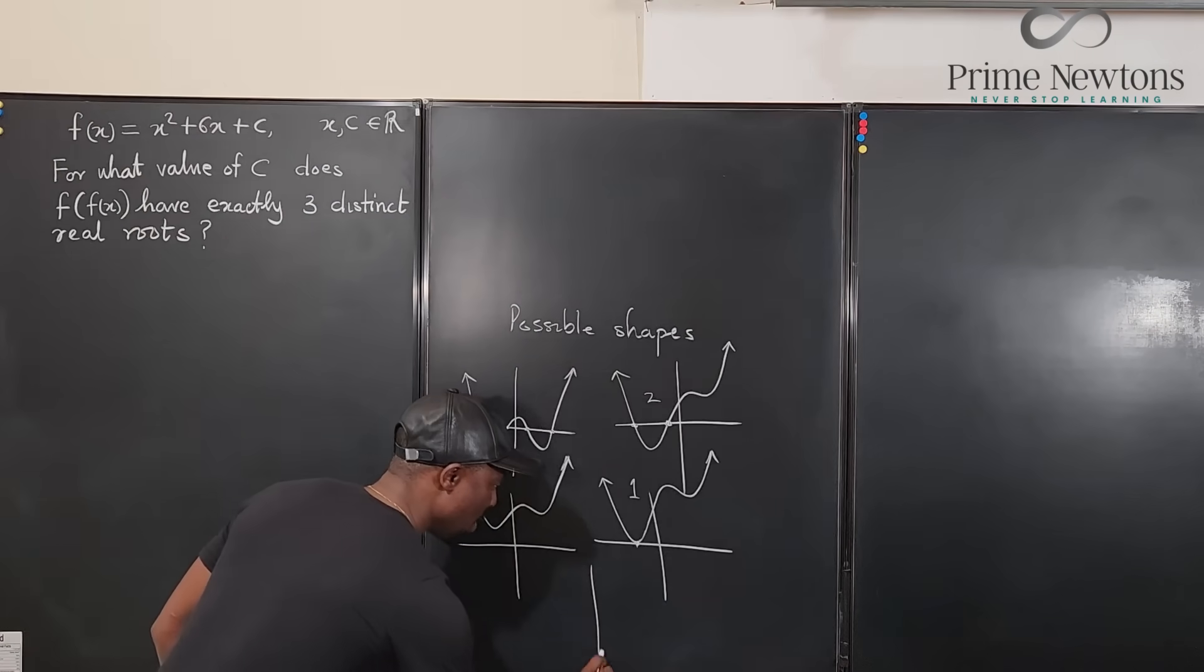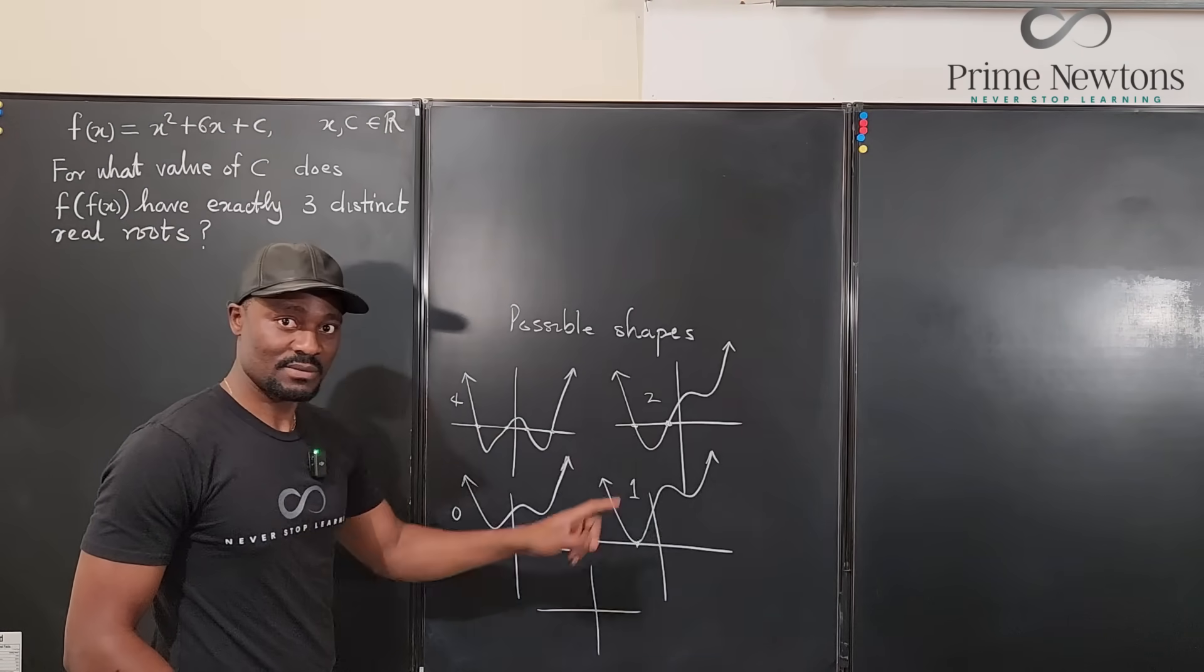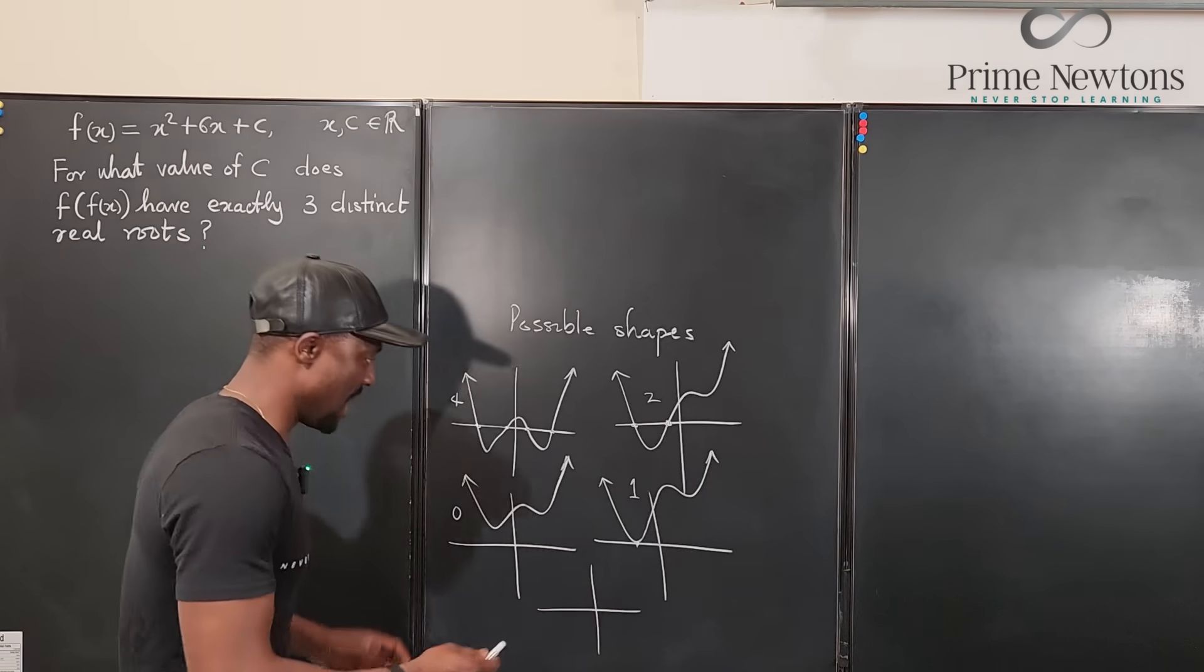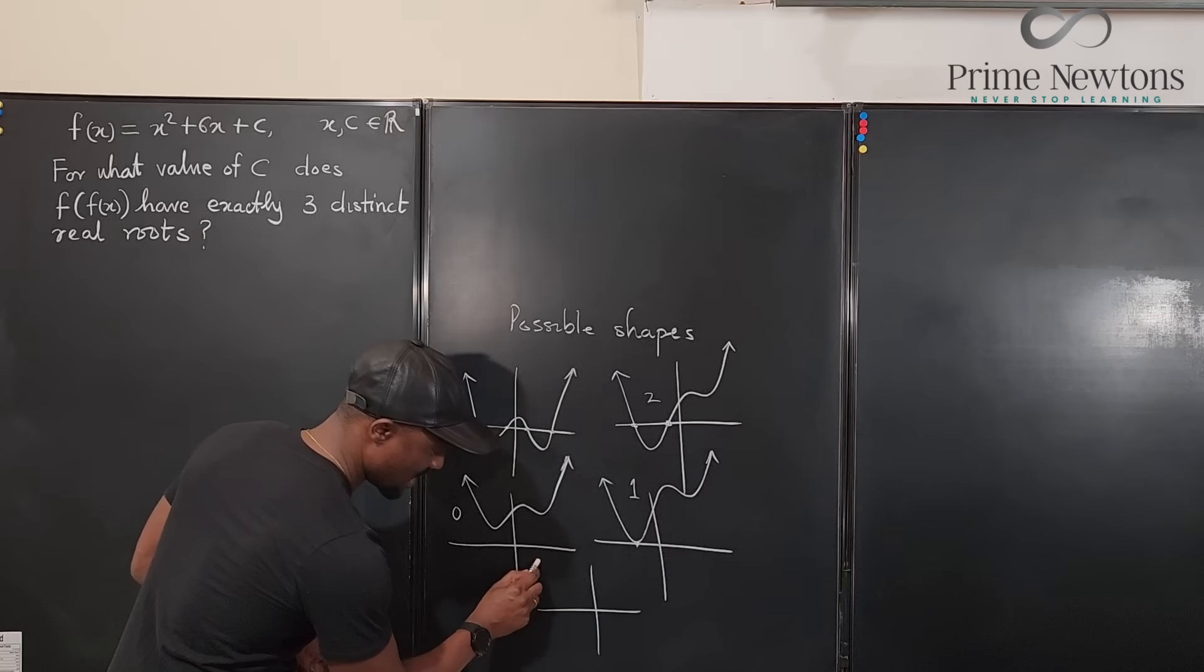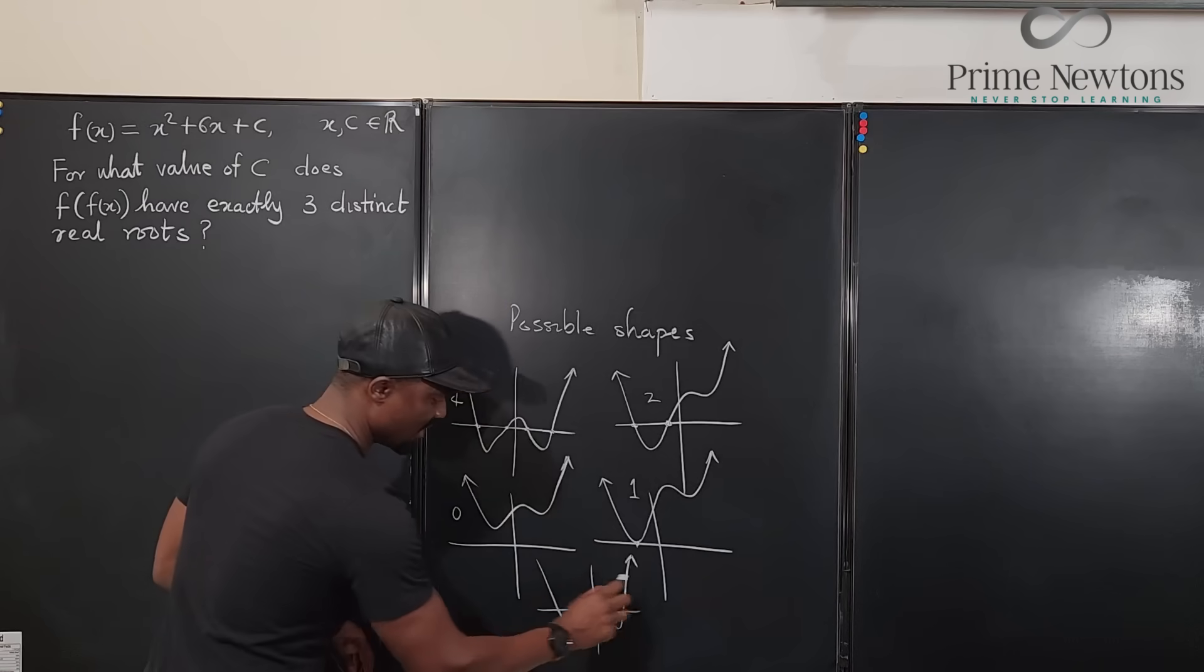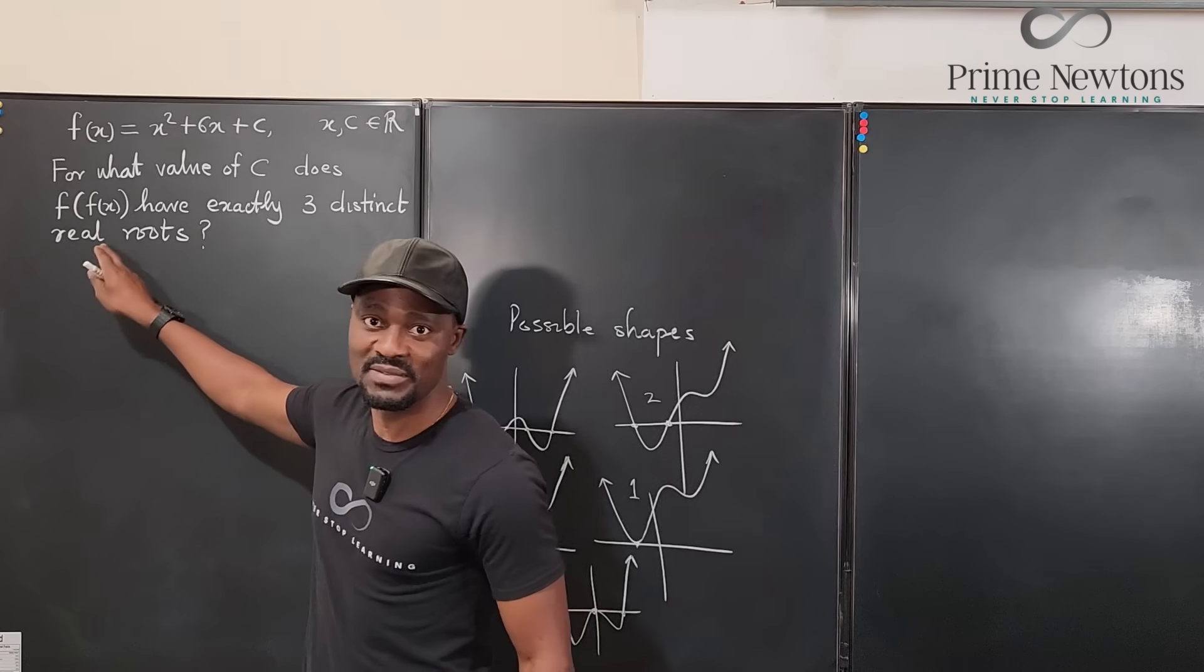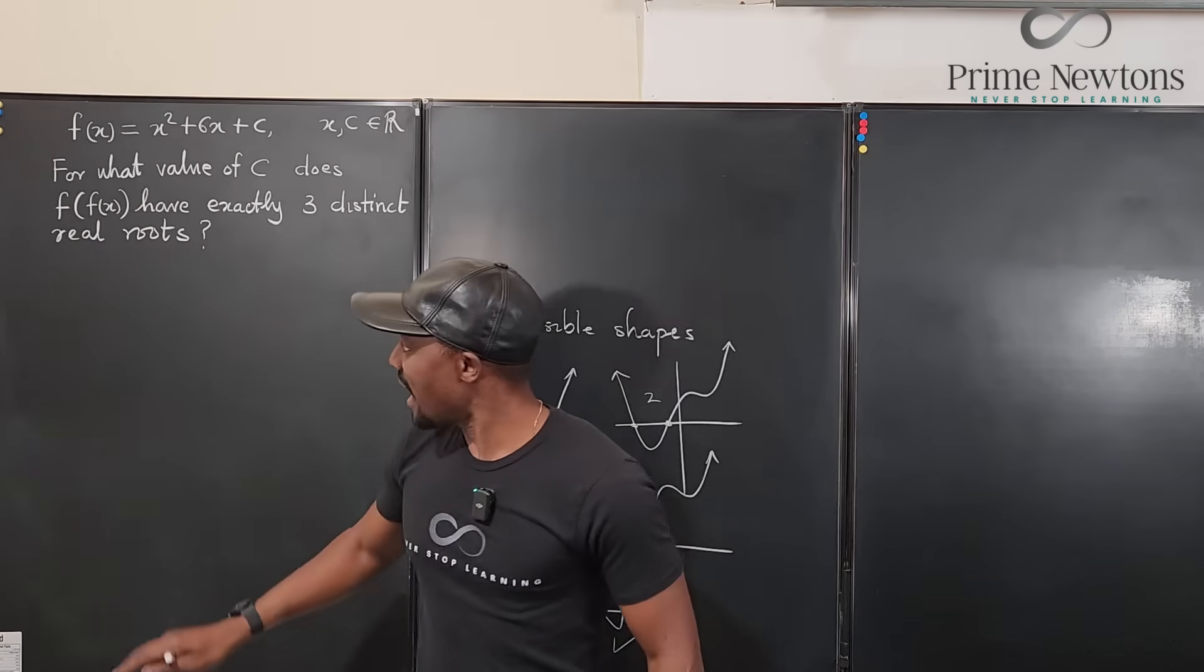So the only time you can get three roots is if you're going to get one combined with two. So we're going to have a situation where there is a bounce off of the x-axis, and there is an intersection somewhere. That's when you can get three. So maybe a possibility, where will there be a bounce? So we might get something like this. This one may be a bounce like this. Something like that. So here you got one, a bounce, and another one. So this must be the graph of f of f of x.